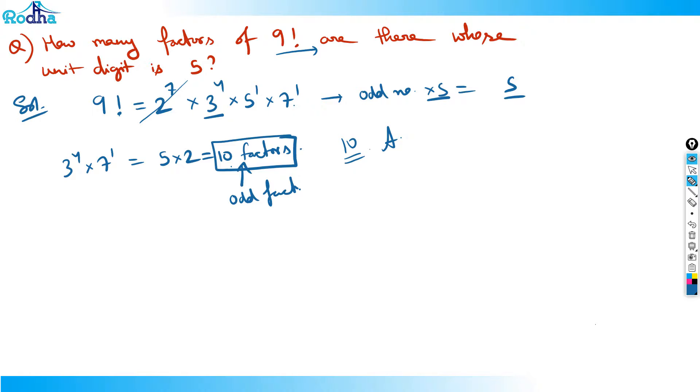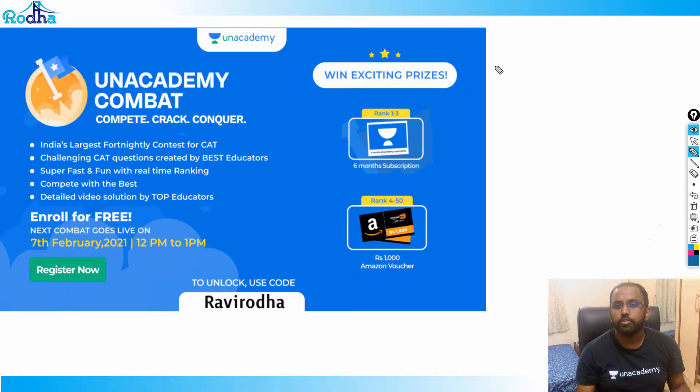I hope you got the logic right. So the question was how many factors of 9 factorial are there whose unit digit is 5. 9 factorial is 2 to the power 7 into 3 to the power 4 into 5 raised to 1 into 7 raised to 1. And basically, any even number into 5 will never end into 5 actually. That means just cross all the 2's. Then we have got how many odd factors with us, because any odd number with 5 will end in 5. How many odd factors are here? So 3 to the power 4 into 7 to the power 1, we have got 10 odd factors. That means 10 odd factors means 10 odd numbers. Those 10 odd numbers when multiplied by 5 will always end in 5.